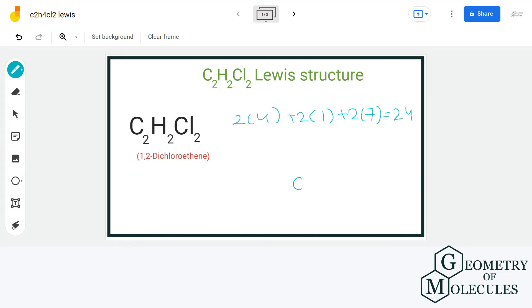Now for the arrangement of atoms, we will put two carbon atoms adjacent to each other and attach chlorine to each carbon. We have two hydrogen atoms that will form a bond with each carbon atom.